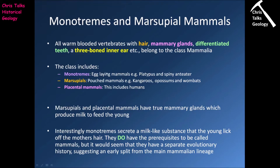The monotremes are referred to as the egg-laying mammals and include animals like the platypus and the spiny anteater. The marsupials are often referred to as the pouched mammals and include organisms like kangaroos, possums and wombats. Finally, we have the placental mammals, which include humans.